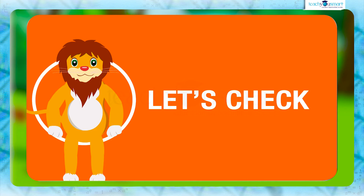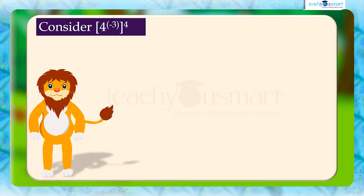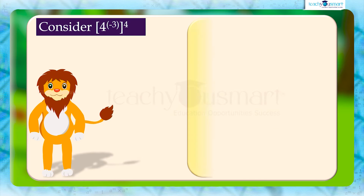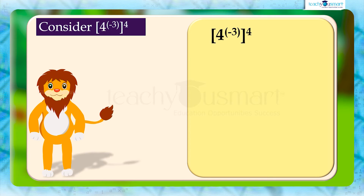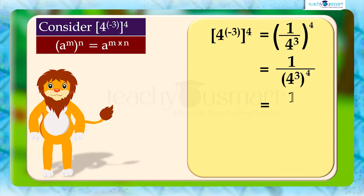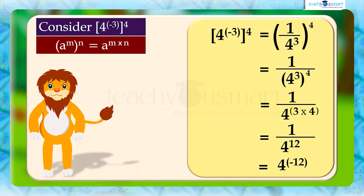Let's check. Consider 4 raised to minus 3, the whole raised to 4. We can write 4 raised to minus 3 as 1 by 4 raised to 3. Then 4 raised to minus 3, the whole raised to 4, equals 1 by 4 raised to 3, the whole raised to 4, equals 1 divided by 4 raised to 3 multiplied by 4, equals 1 by 4 raised to 12, equals 4 raised to minus 12. That is, 4 raised to minus 3, the whole raised to 4, equals 4 raised to minus 12.